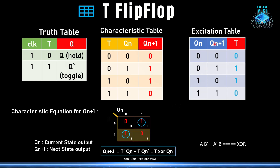For the T flip-flop excitation table: if the current state is 0 and next state should be 0, I need to hold the value, so T = 0. If current state is 0 and next state should be 1, I need to toggle, so T = 1. If current state is 1 and next state should be 0, I need to toggle, so T = 1. If current state is 1 and next state should remain 1, I need to hold, so T = 0.